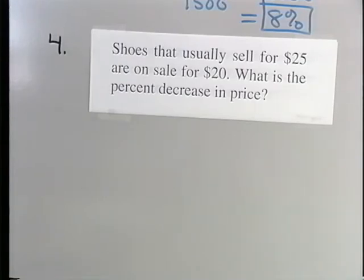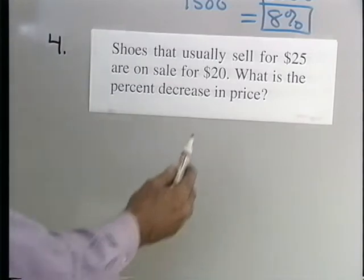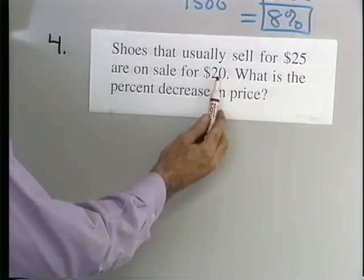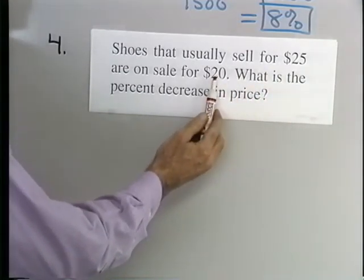Problem 4, shoes that usually sell for $25 are on sale for $20. What is the percent decrease in price? So if they normally sell for $25, and now they're on sale for $20, then they've decreased in price $5.